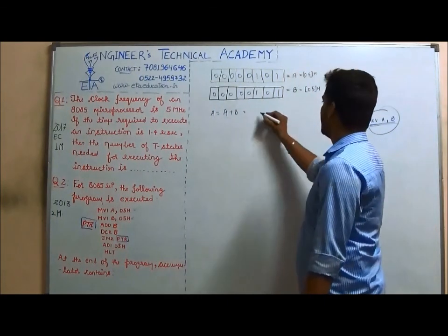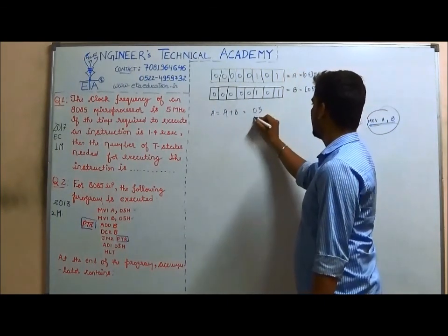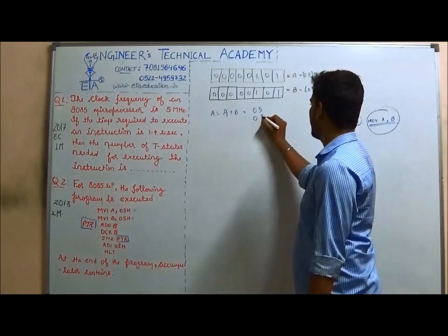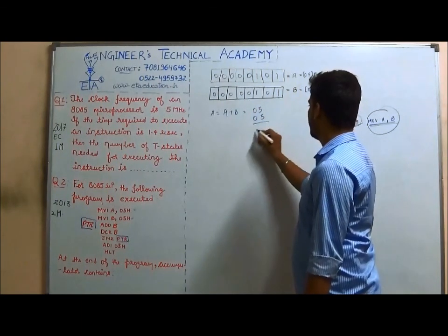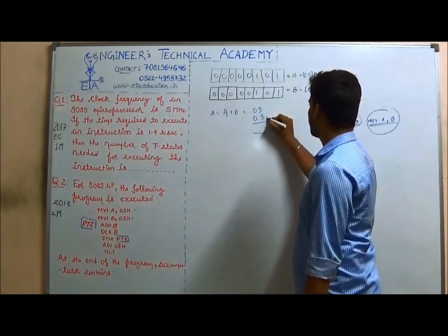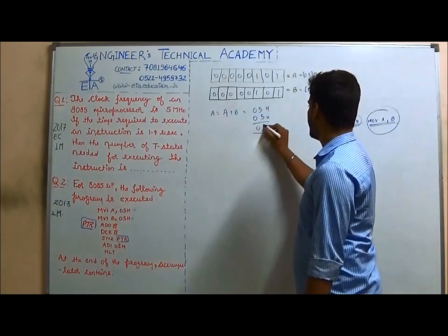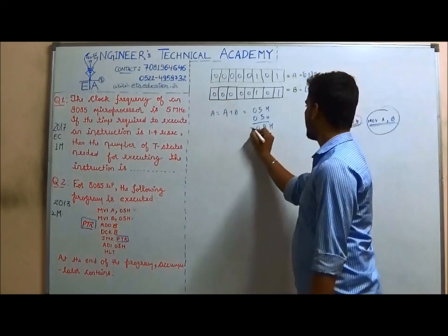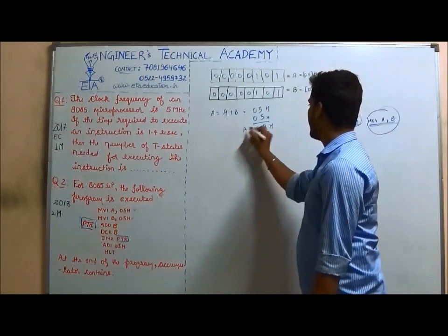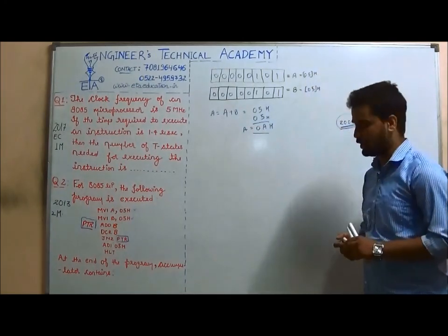So A = 05H + 05H = 0AH. The contents of the accumulator will be 0AH.